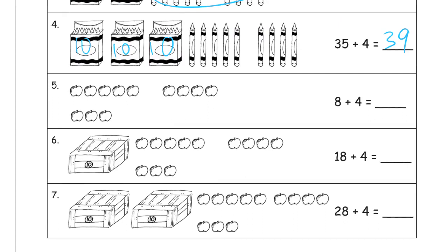Now we can do the same thing with eight plus four. It's a little bit different because it adds up to more than ten, and what we want to do is make a ten. You can see this eight, but it's missing two apples right here. So think: what if these two apples were over here? Then that would be a ten. You might remember this from before — making ten to add. That's the two we move over to join the eight, and then the two that are left behind.